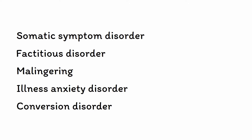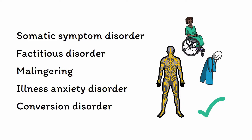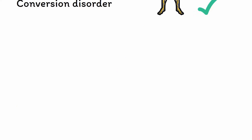Finally, conversion disorder is similar to somatic symptom disorder in that the signs and symptoms are genuinely experienced. However, it differentiates itself in that it involves specifically neurologic abnormalities such as weakness, numbness, blindness, or seizures. As we'll find out later, conversion disorder shares a lot in common with dissociative disorders and is perhaps best understood through that lens. So those are the main disorders featuring medically unexplained symptoms in a nutshell. For the rest of this video, we're going to be focusing in on somatic symptom disorder in particular.